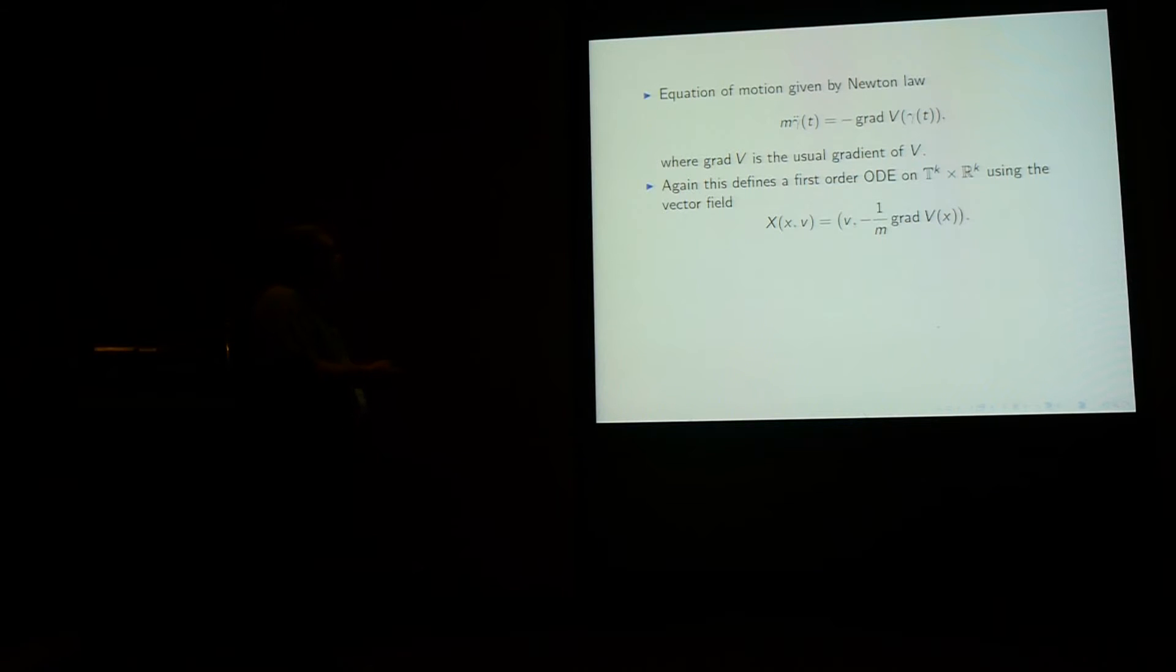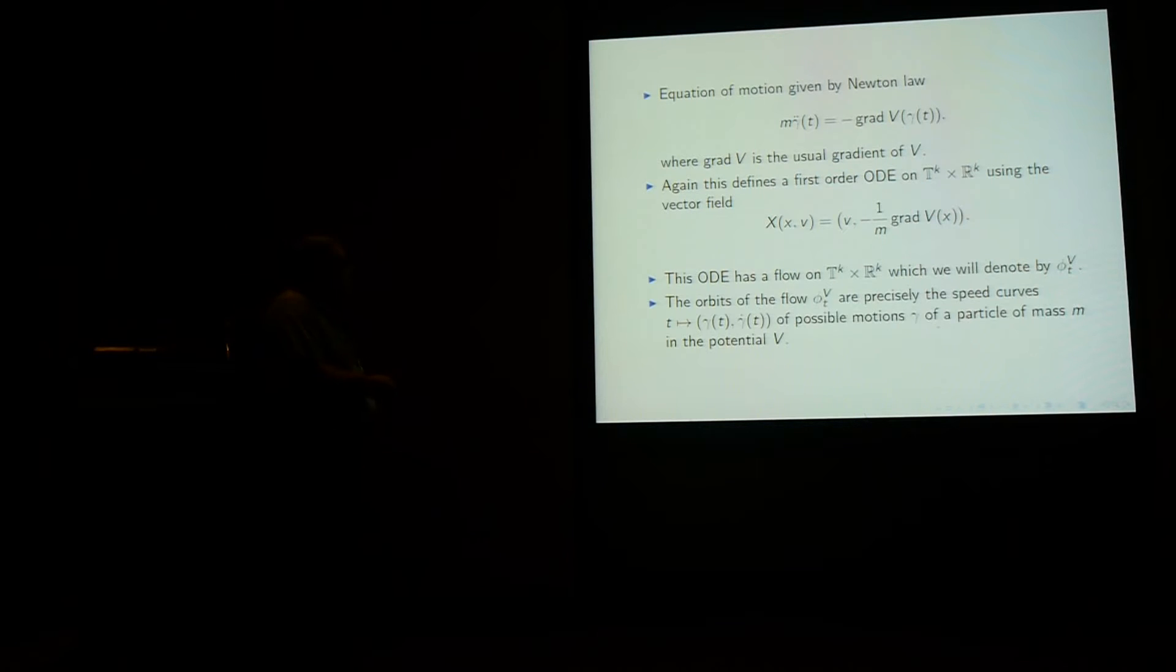So the equation of motion is given by Newton's law. And it defines again a first-order ODE on position, but now positions are in Tᴷ because everything is Zᴷ periodic, and speed is in Rᴷ. So it's given by the vector field X of xv is v minus 1 over M gradient of V at x. And of course it has an ODE, this ODE has a flow, which we denote by phi_T subscript V to remember. The orbits of the flow are precisely the speed curve of the possible motion of a particle of mass M in that potential.